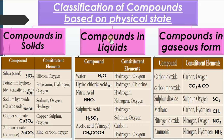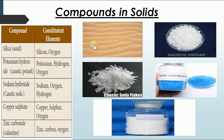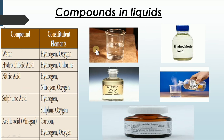Now let us see some pictures: silica sand, potassium hydroxide (caustic potash), sodium hydroxide (caustic soda flakes), copper sulfate (blue in color), and zinc carbonate (calamine). For liquid-state compounds, you can see water, hydrochloric acid, nitric acid, sulfuric acid, and acetic acid (vinegar). For gaseous compounds, almost all gases are colorless so there are no pictures, but all the gaseous compounds discussed are colorless.